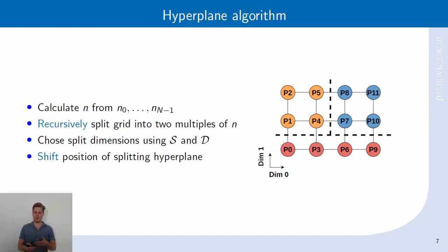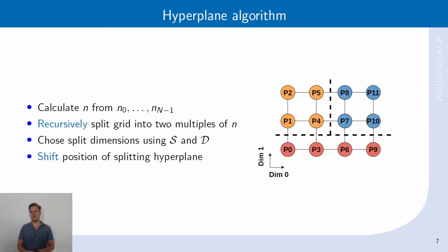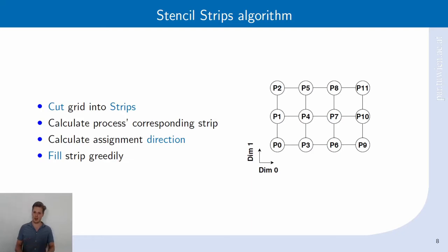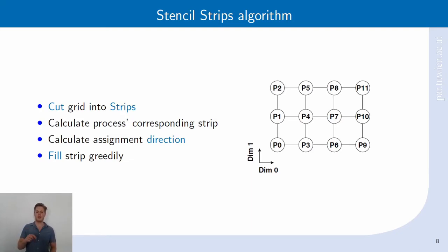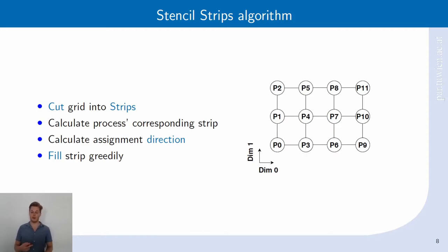The hyperplane algorithm works well if the dimension sizes of the grid are well factorizable by the input number n calculated at the beginning. If the dimension sizes are not well factorizable by n, this can lead to very skewed partitions. To avoid that, we introduce our last algorithm, the stencil strips algorithm. It works very differently in comparison to the first two algorithms. It first cuts the grid into strips, and each process can then calculate the strip it belongs to. We impose an assignment direction along the strips to fill up the grid. This is shown on the 4x3 grid with two strips.